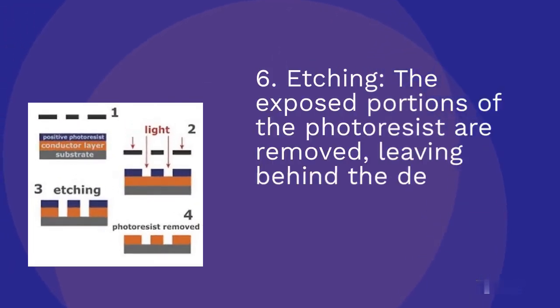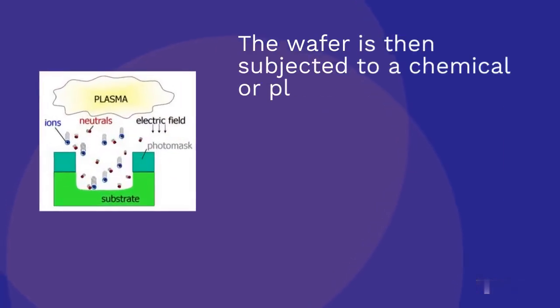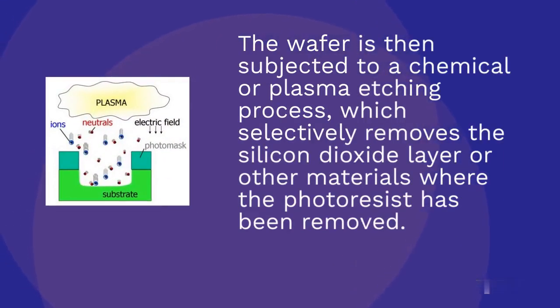Etching: The exposed portions of the photoresist are removed, leaving behind the desired pattern on the wafer surface. The wafer is then subjected to a chemical or plasma etching process, which selectively removes the silicon dioxide layer or other materials where the photoresist has been removed.